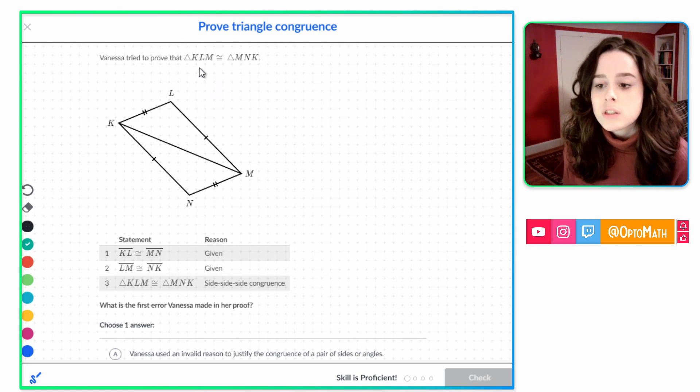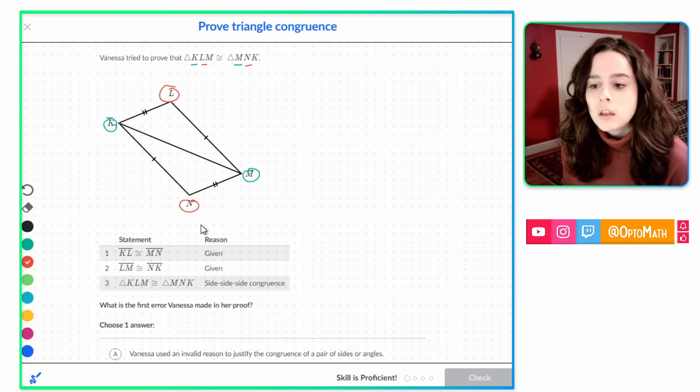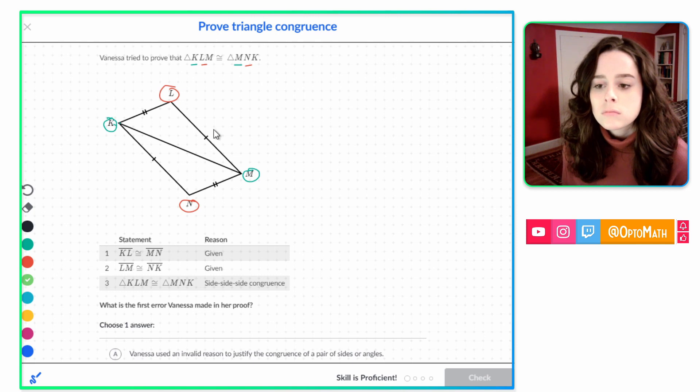So let's call K and M be this blue color. So we know K and M go together. Let's say L and N go together as red. And then we have K and M. And that's going to be green. And notice I'm circling those twice.